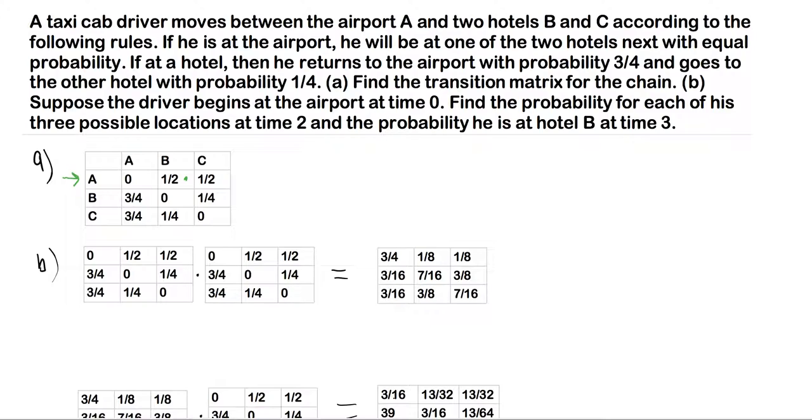So then we move on. If at a hotel, he then returns to the airport with probability three-fourths. So at both B and C here, we have three-fourths probability returning to A. And then it says they go to the other hotel with probability one-fourth. So from B,